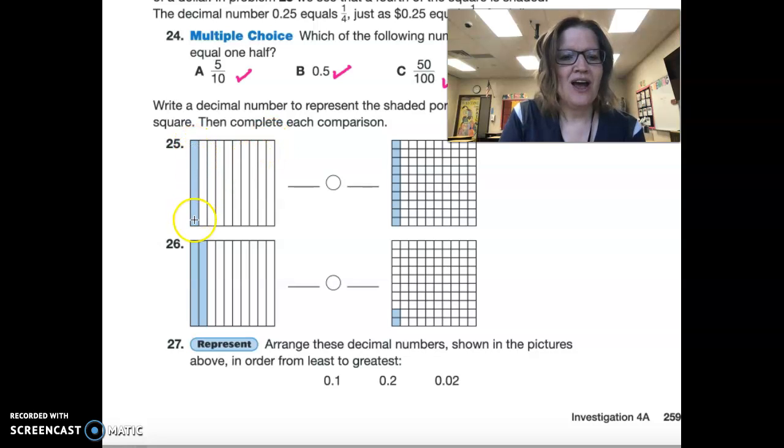Notice, we have 1 out of 10, so our decimal number is 1 tenth, or we can look at this, it's been cut up into more pieces, this is also 10 hundredths. Do you see what I'm saying?